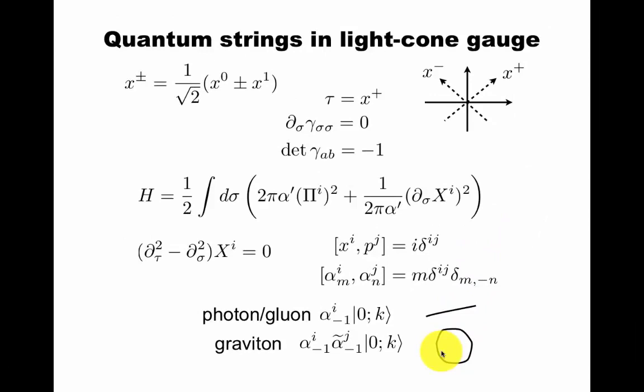Non-covariantly, we have fixed the world sheet metric, we fixed space time to be flat, the symmetries are not manifest. This is not really convenient in many respects. We'll do covariant quantization, it's in Polchinski chapter 3 to 5, it is more work, but it's worth it, it sheds light on a lot of other things you might have learned, it's a very nice structure.